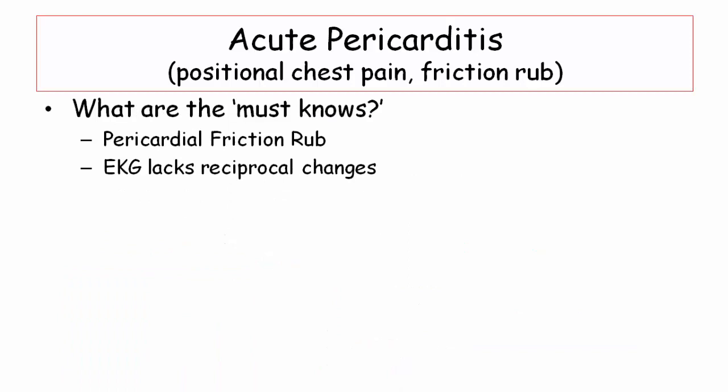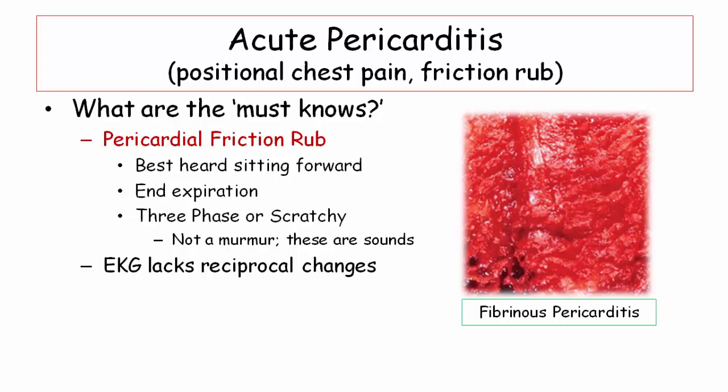So what are the remaining must-knows? They include a clear understanding of the friction rub and the typical pattern of injury seen on the electrocardiogram. Insofar as the friction rub, it is best heard sitting forward and at the end of expiration — no magic here. This simply brings the heart into close proximity of the chest wall for easy listening. As for the sound, please note it will be described as a heart sound, not a murmur. When they use the phrase 'sound,' always be on the lookout for non-valvular cardiac conditions.